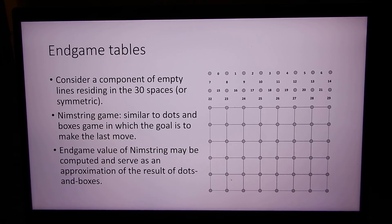How do we give a value to that? Well, we approximate dots and boxes by creating another game called NimString, where the goal is to be the player to make the last move, basically to regain control. And the endgame value can then be computed. This is an example of a nimber in combinatorial games. And it can serve as an approximation to the result of dots and boxes.